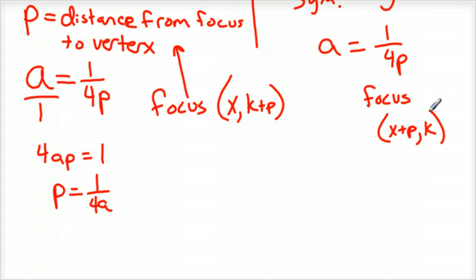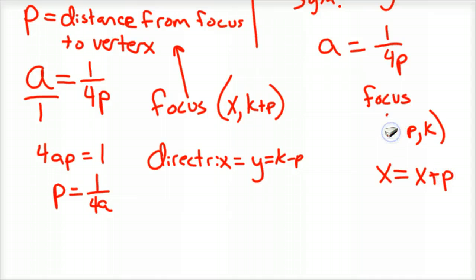Your directrix is the equation, in this case, y equals k minus p. And in this case, your directrix line is x equals h minus p. This should be h plus p, and this should be h minus p. Now your formulas are correct. I apologize, I should have scripted this out a little better. But, don't have time to do that.